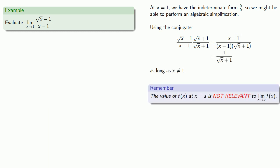But since the value of the function at the limiting point is not relevant to the value of the limit, then the limit of our original expression and the limit of our new expression are the same because the two expressions are the same everywhere except for at x equals one. And so we can find the limit.